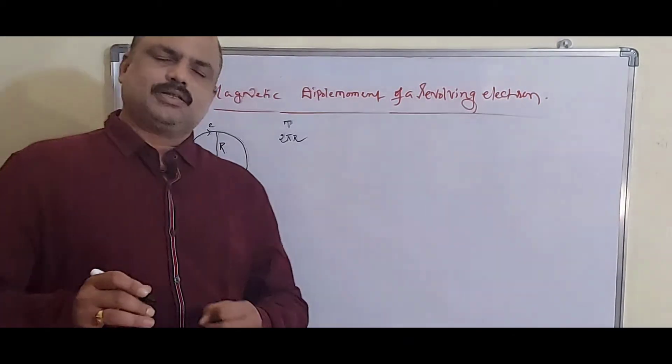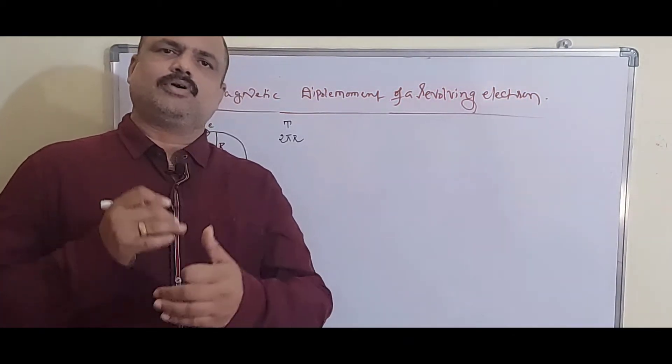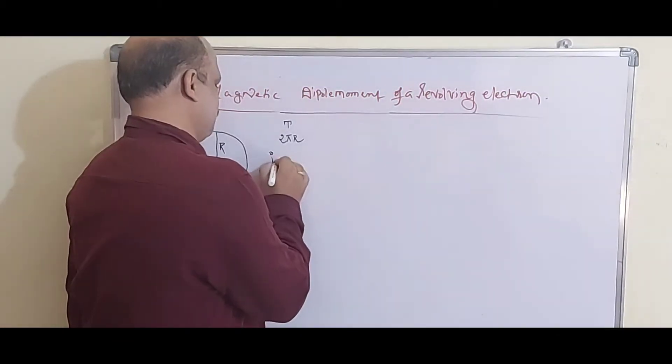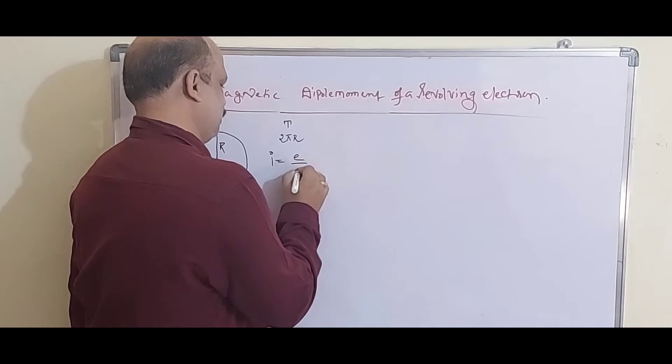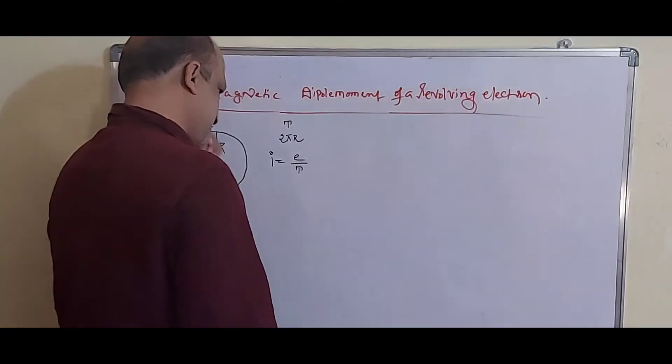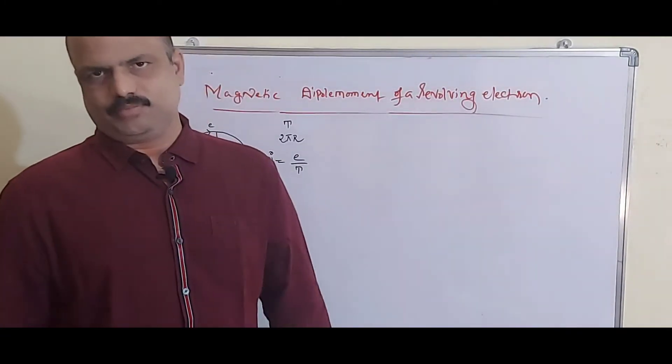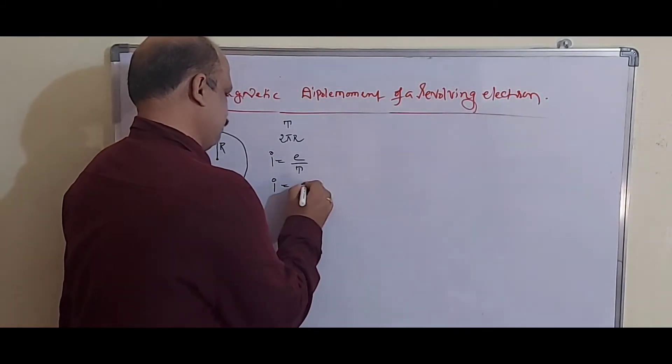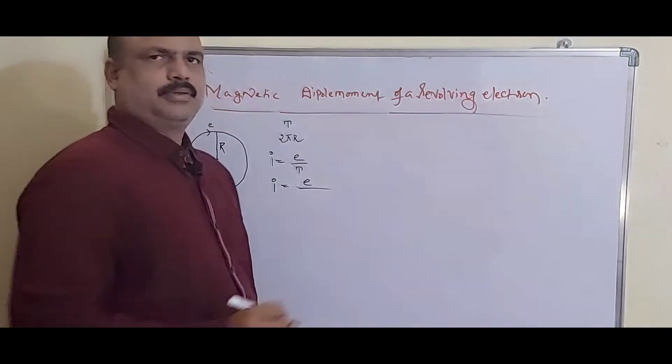Whenever this electron is revolving in an orbit, the current produced is I equals E by T, charge by time.